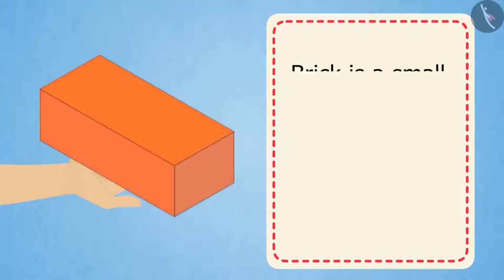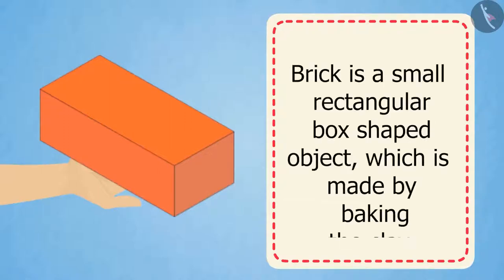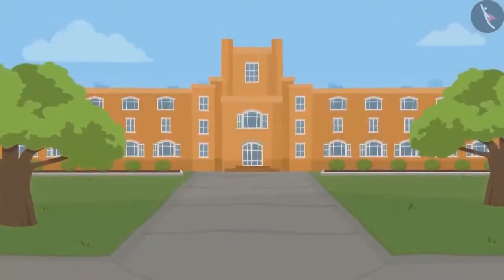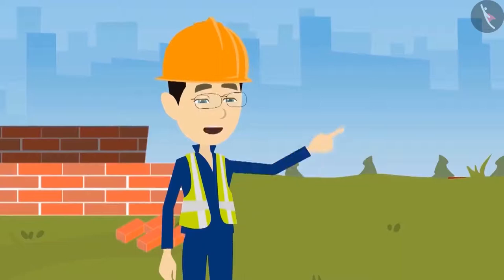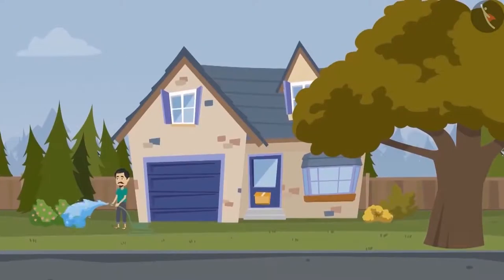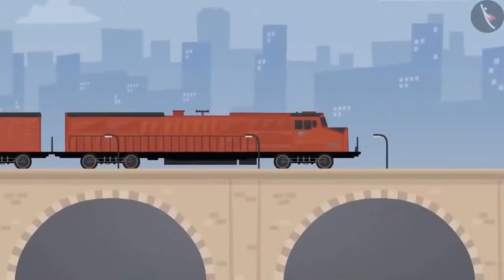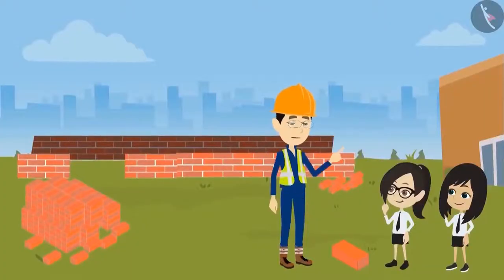This red object is called a brick. A brick is a small rectangular box-shaped object which is made by baking the clay. Are the walls of our school also made of bricks? Yes, and not just this school — your home, all the buildings in this city, and bridges are all made of bricks. Bricks are used in almost every construction work.